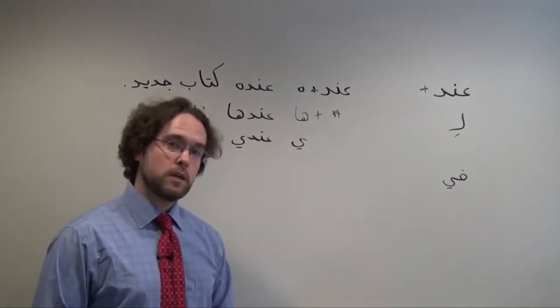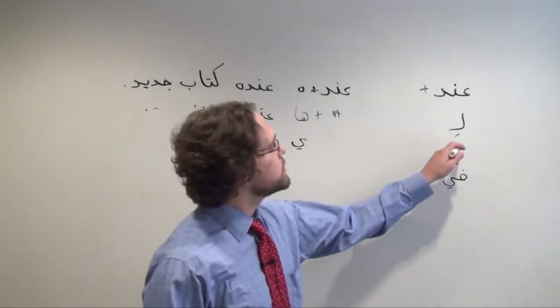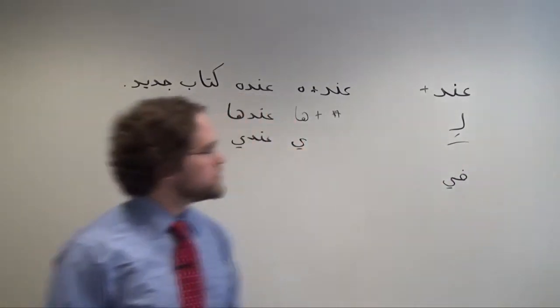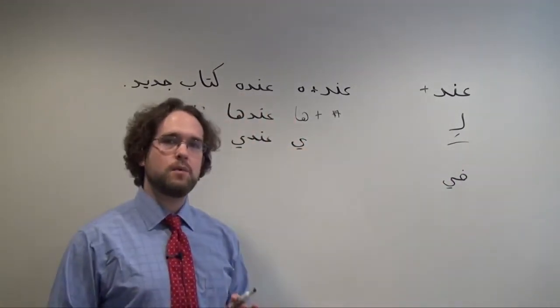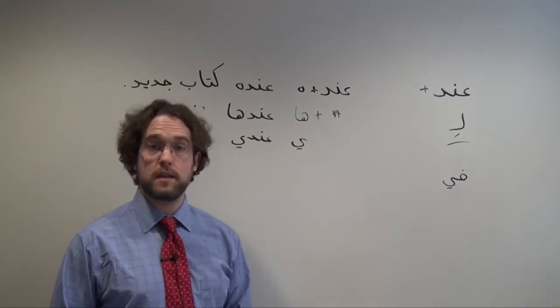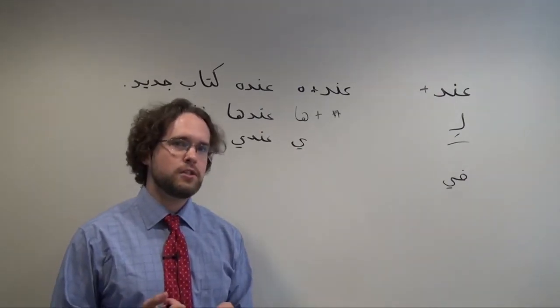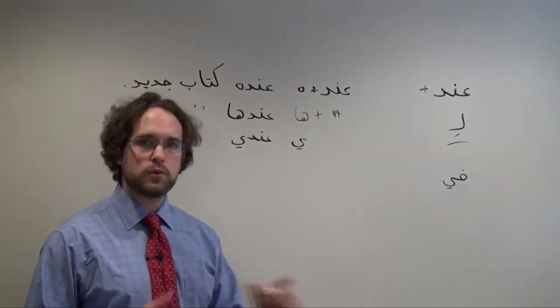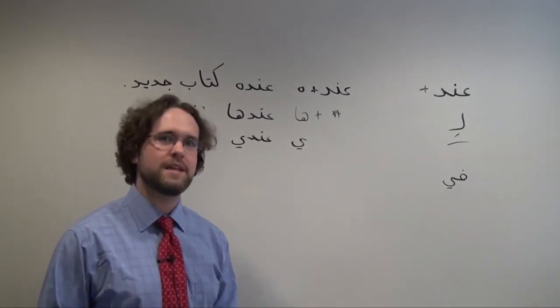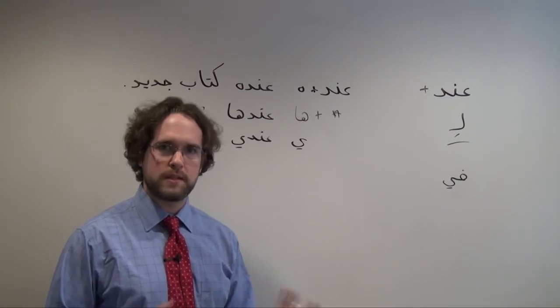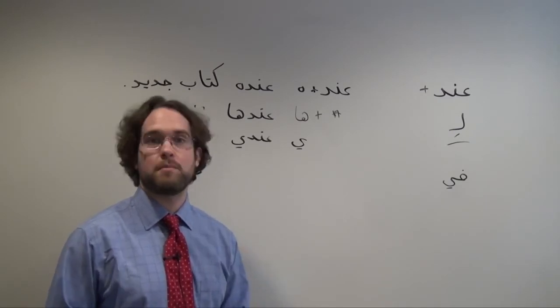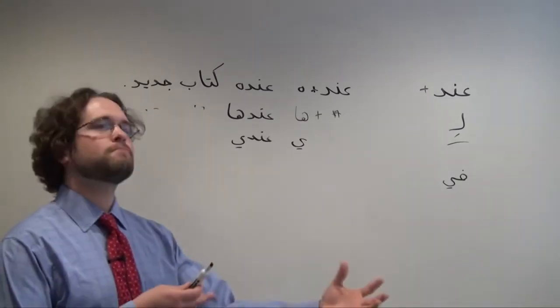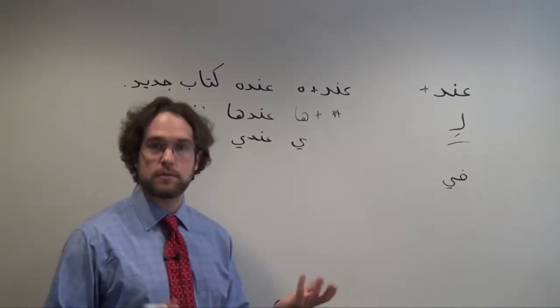Another common way you hear possession expressed is through the particle لِ, which has kind of an overlapping meaning with عند, but we tend to use it for, for one thing, in more formal contexts, and to express abstract relationships, especially familial relationships, where the possession is figurative rather than literal, right? We don't carry around our family members in our pockets, but we possess them, we have them in a certain sense.